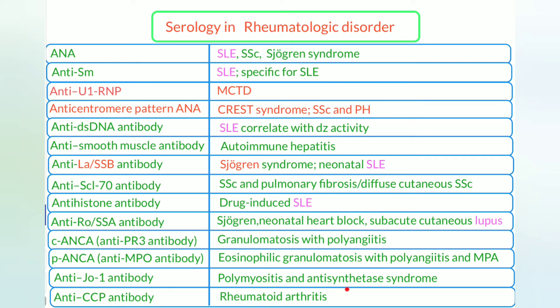Anti-Jo-1 antibody is for polymyositis and anti-synthetase syndrome. Anti-CCP (anti-cyclic citrullinated peptide) antibody is very important and very specific for rheumatoid arthritis — everyone should know anti-CCP. This covers the most important serology in rheumatological disease.